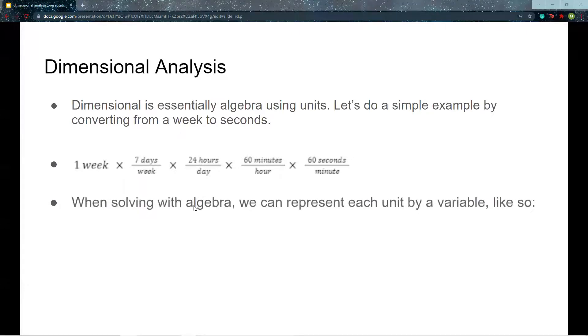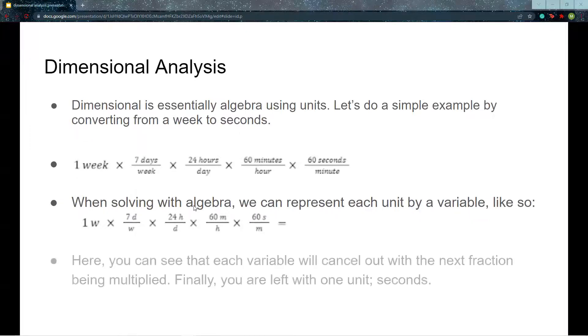We can represent each unit by a variable, so 1w times 7d over w times 24h over d times 60m over h times 60s over m. In this representation, we can see that cross-simplification allows us to cancel out each variable as we multiply. Weeks will cancel out weeks, days cancel out days, and so on.